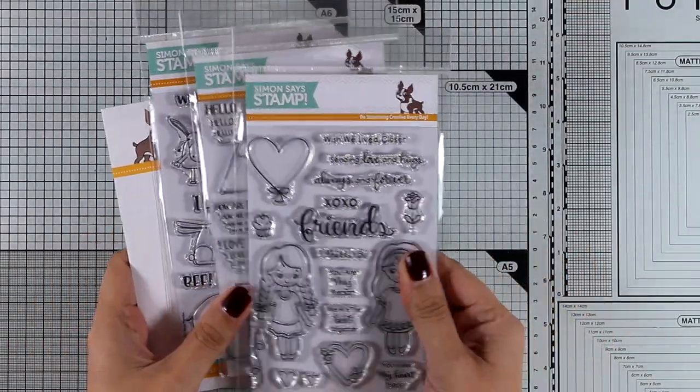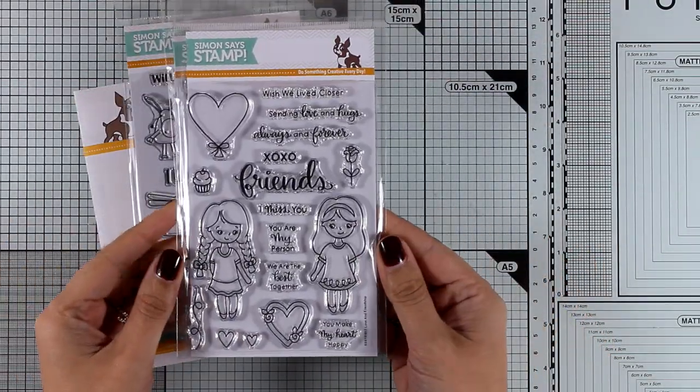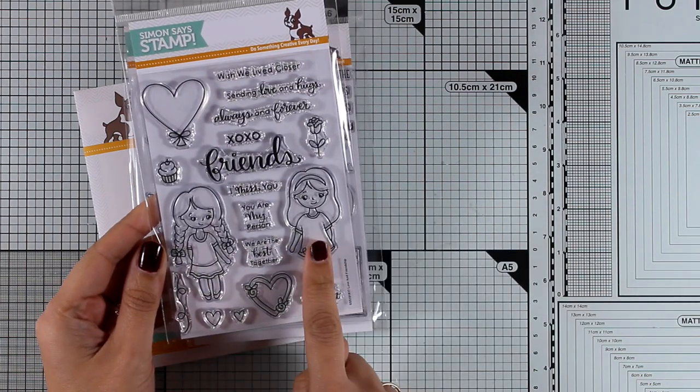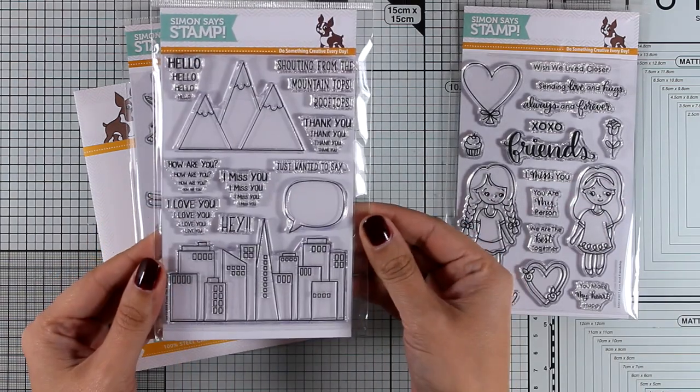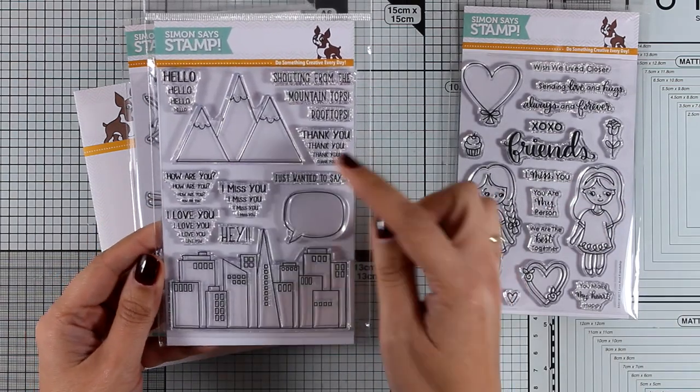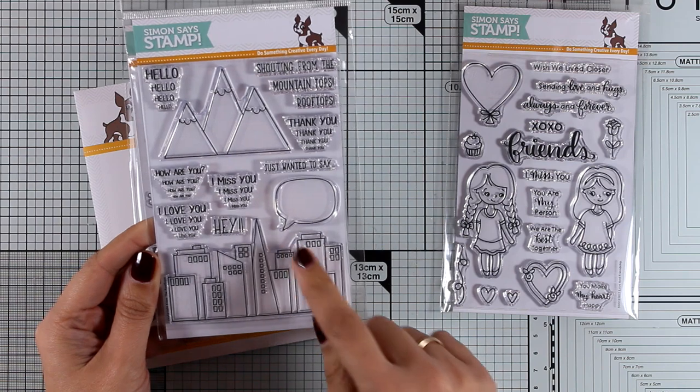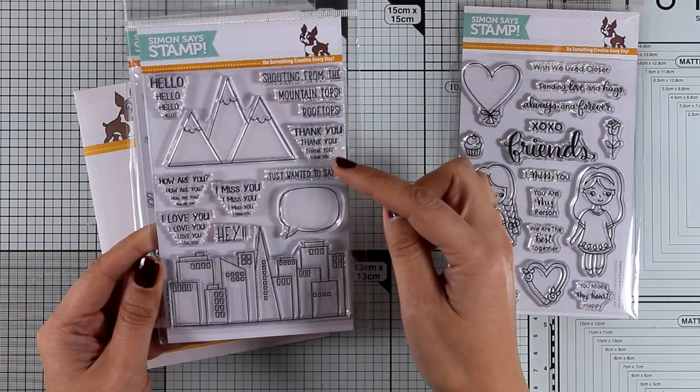Before I start with my card, I'm going to show you just a few favorites from this release. The first one is a stamp set called Love and Friendship with these adorable little girls that, if you stamp them next to each other, they look as if they are holding hands.